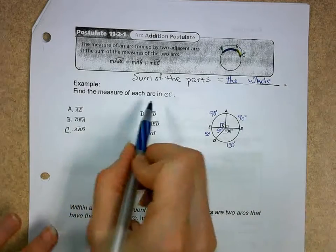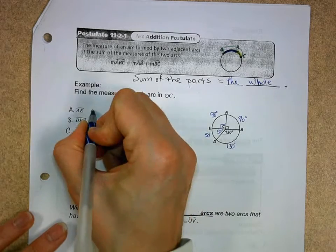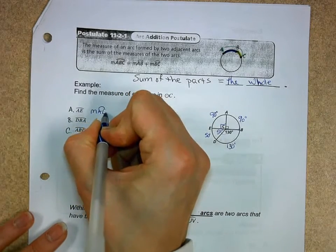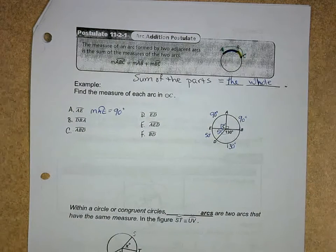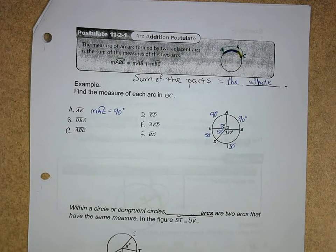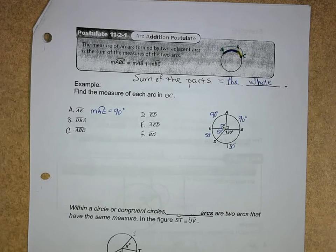Like here, it says find the measure of each arc. So they go arc AE. Well, we found that to be 90 degrees. So the measure of arc AE equals 90 degrees. Notice the instant I use the equal sign, an M goes in front of the arc. The measure of arc AE. Treat it just like an angle of a triangle.